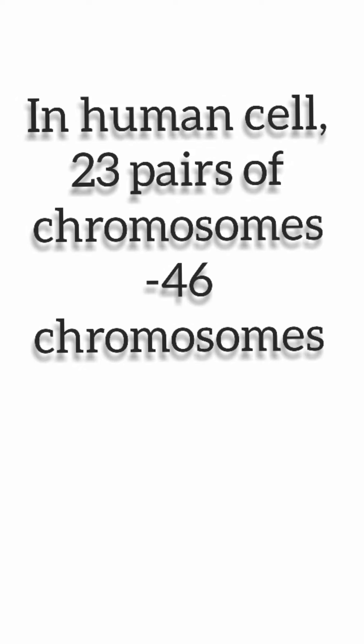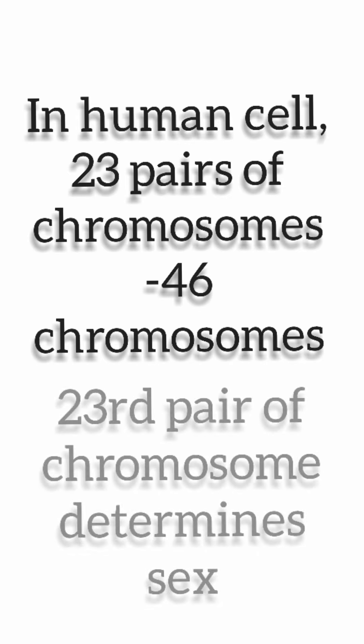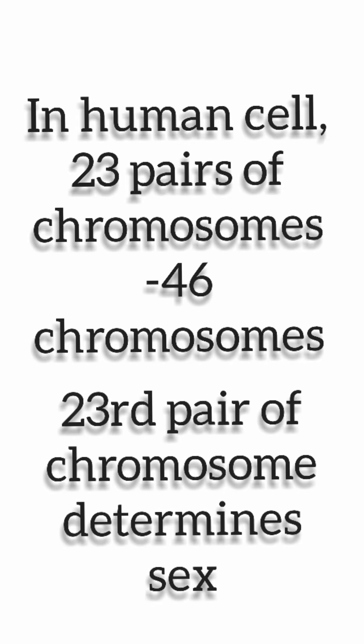Second is genetic sex determination, in which genes are involved. In a human cell, there are 23 pairs of chromosomes and the total number of chromosomes is 46. The 23rd pair of chromosomes determines sex.